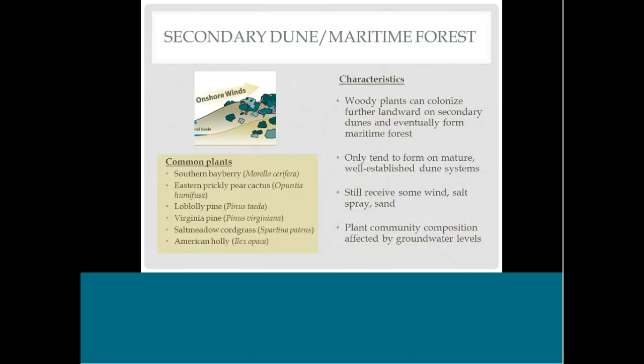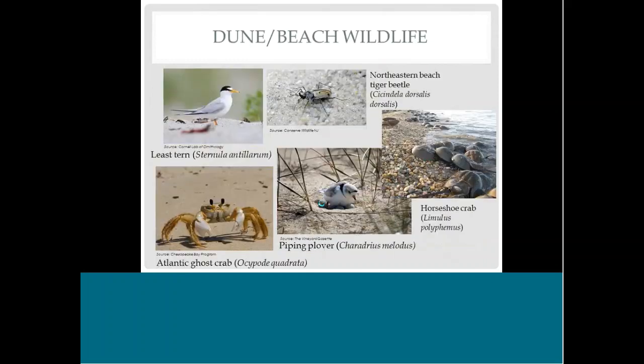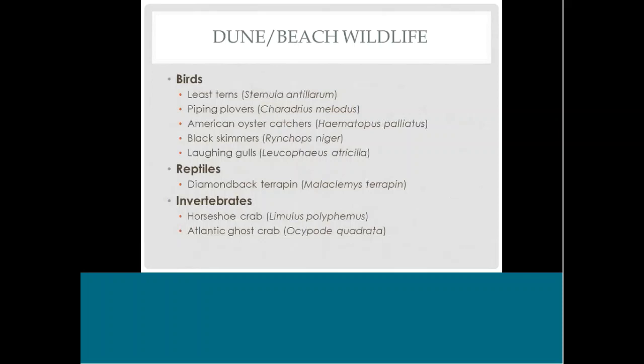In younger or unstable systems, or areas with a lot of human development right up to the shoreline, you might only have a beach or a beach and a foredune — the more complex systems can only form where there's little human disturbance. Some unique wildlife using beach and dune habitats includes least terns and piping plovers nesting there, horseshoe crabs and ghost crabs along the shoreline, diamondback terrapins nesting in the sandy areas, and many gulls and shorebirds.